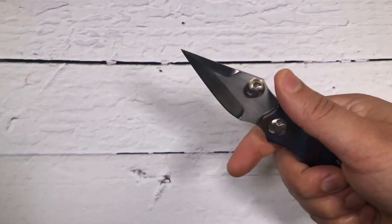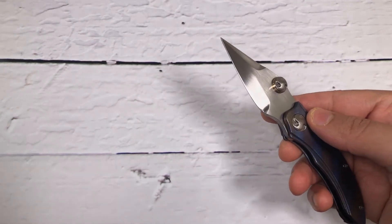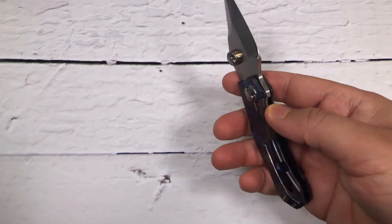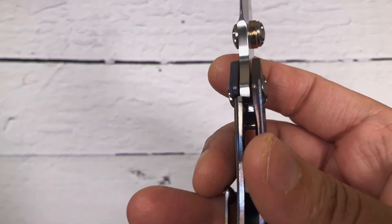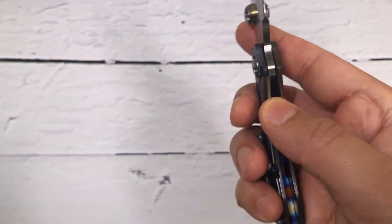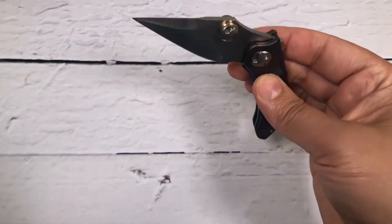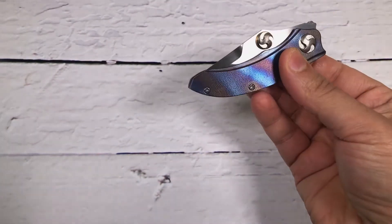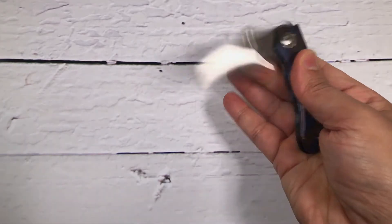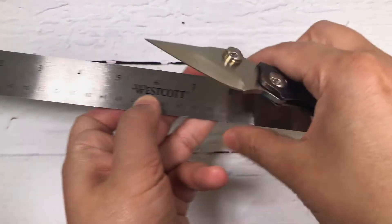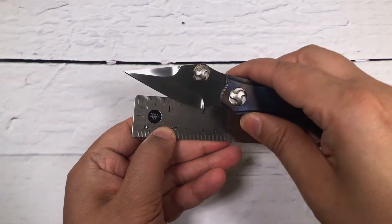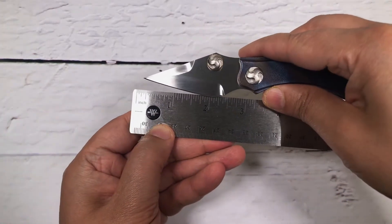Let me bring the scale so we can measure how long is the blade and the overall length of this knife. Lockup is solid, let me show you. Lockup is solid and we call it drop shut. Fantastic knife. Let's measure this one.